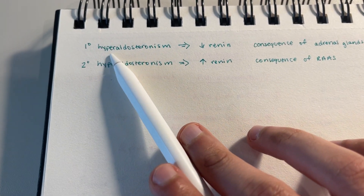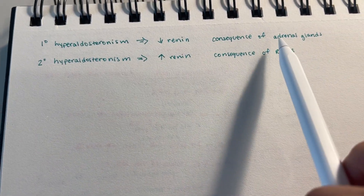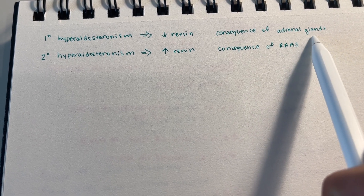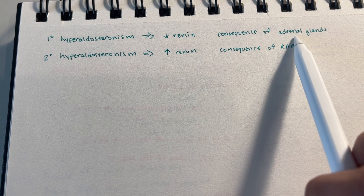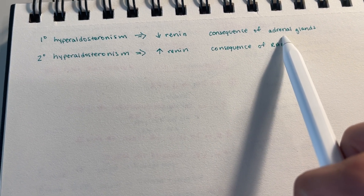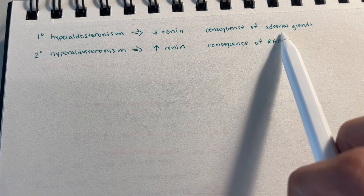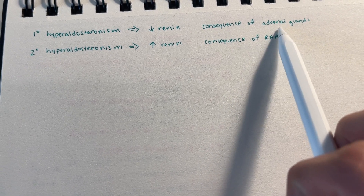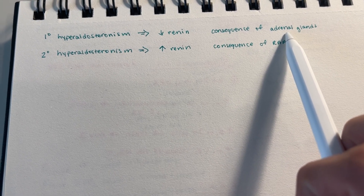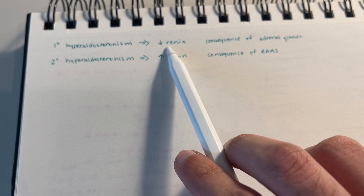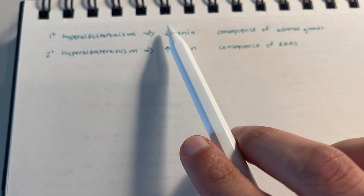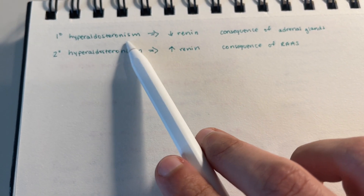In primary hyperaldosteronism, your adrenal glands are secreting a lot of aldosterone independently of anything else. There's some problem with the adrenal glands — maybe a tumor or something like that — causing them to secrete a ton of aldosterone. Aldosterone, as part of a negative feedback mechanism, will inhibit the production or secretion of renin. So if you have a lot of aldosterone, you're going to have decreased renin.